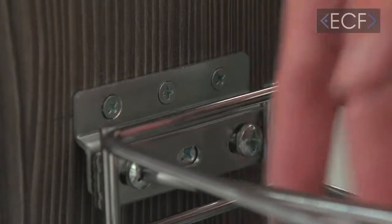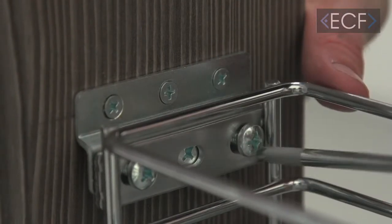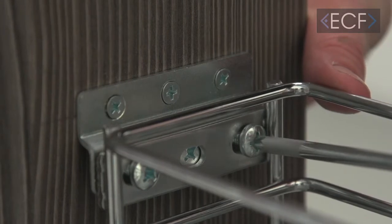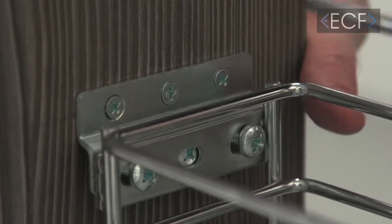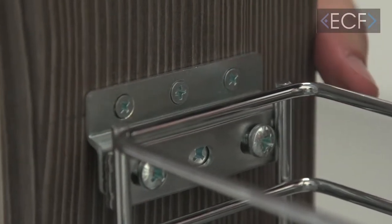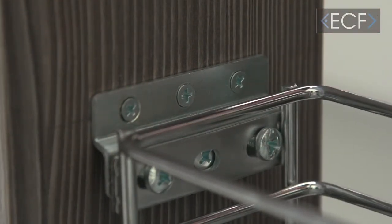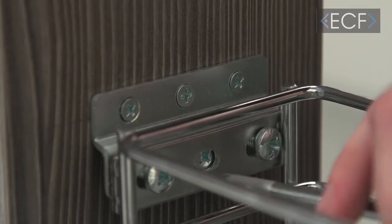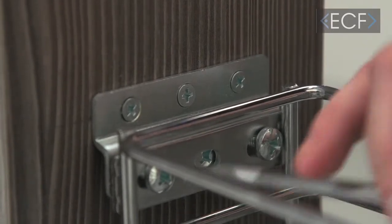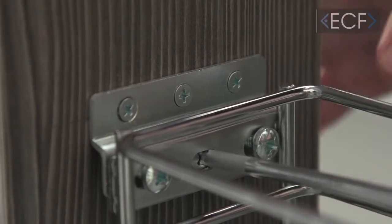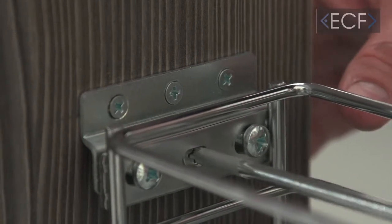You can make side-to-side adjustments by loosening these screws and sliding the door one way or the other. To alter the depth the door sits away from the cabinet, loosen these two screws and adjust the screw in the middle.